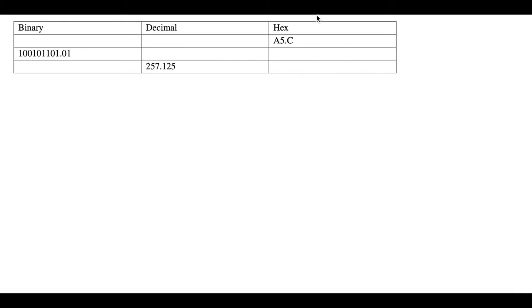Now in hex, the letters represent double digits. So A starts off as 10, B would be 11, C would be 12, D would be 13, E would be 14, and so forth for the rest of the alphabet.